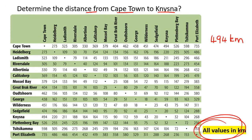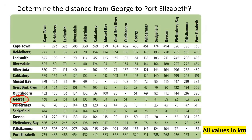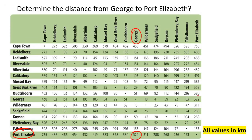Determine the distance from George to Port Elizabeth. Go from George down and Port Elizabeth across, and wherever they intersect that's the answer: 329 kilometers. You could also go Port Elizabeth at the bottom and George across — going down and then across the other way — and you'd still get 329 as your answer. Either way gives the same result.